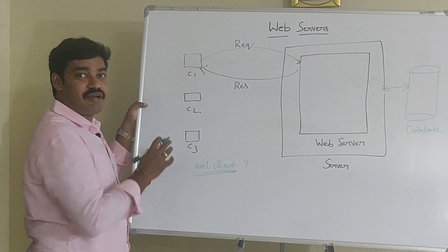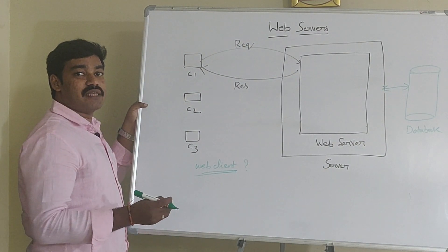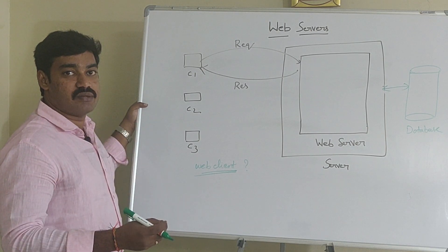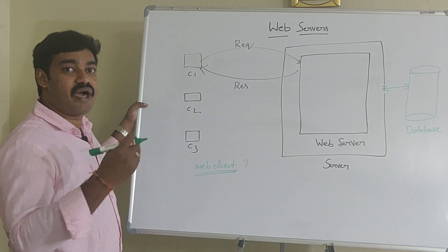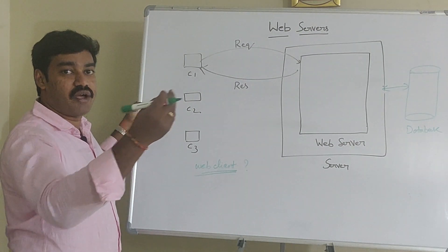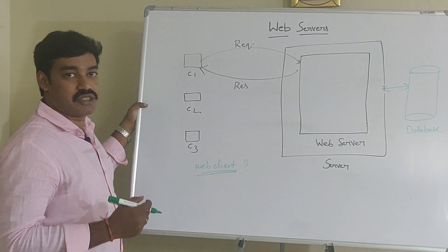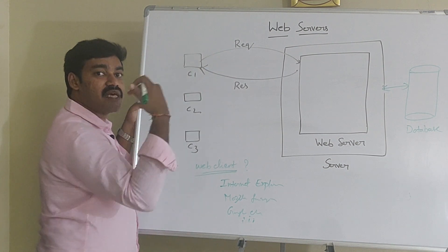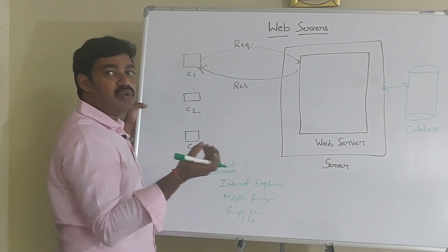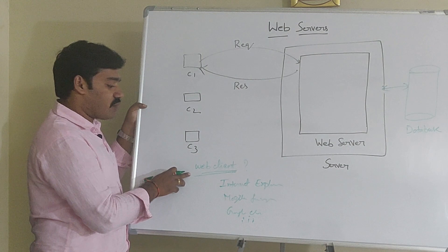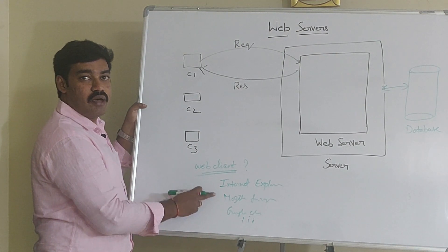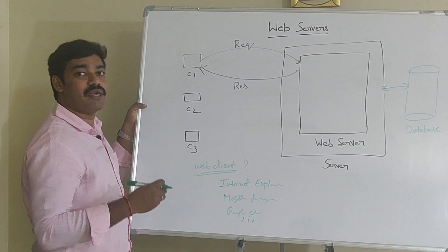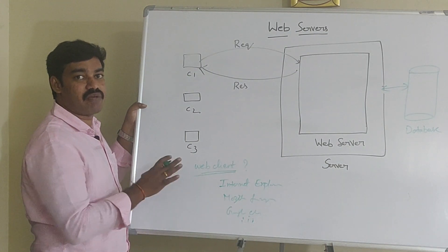What is meant by a web client? A web client is nothing but a web browser. It is a software used to access the files and information from the worldwide web through the internet. Different web clients are Internet Explorer, Mozilla Firefox, Google Chrome, Safari, and many other browsers. All these are nothing but web clients.